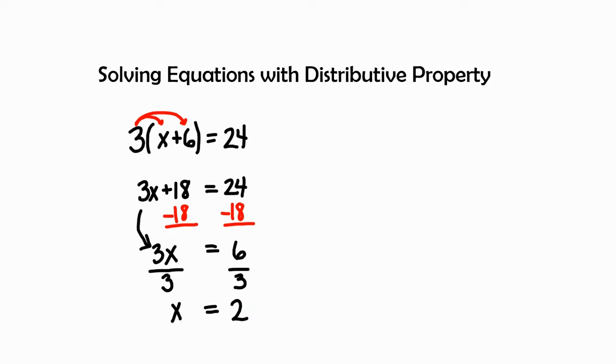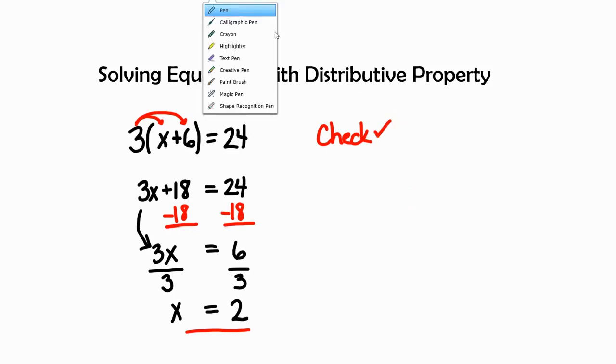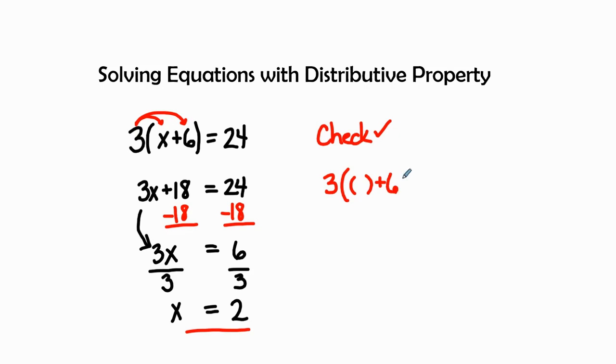Therefore x equals 2 is my answer. So let's go ahead and check that answer. It's always good to check your equations because you will know that you got it absolutely correct when you check your work. So if I get my pen here, I see that I go 3 times - I thought that was going to be in black - we'll have our parentheses for our variable plus 6 equals 24. Now I'm going to go ahead and plug in this 2.